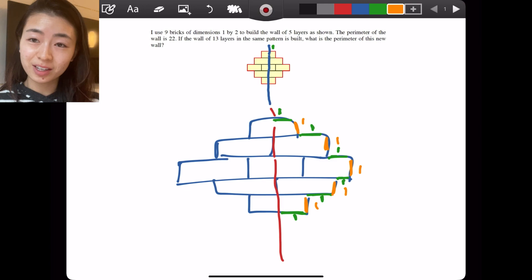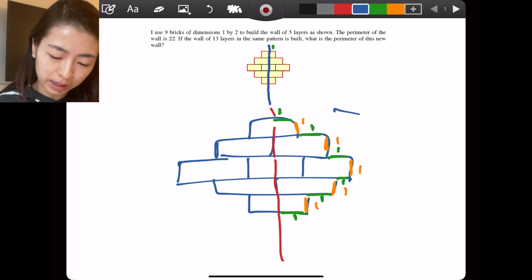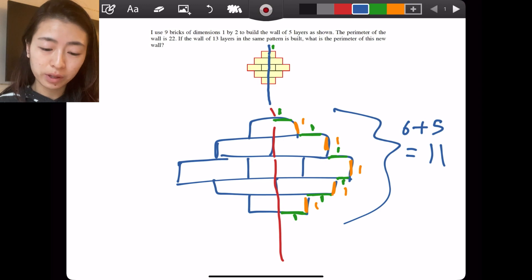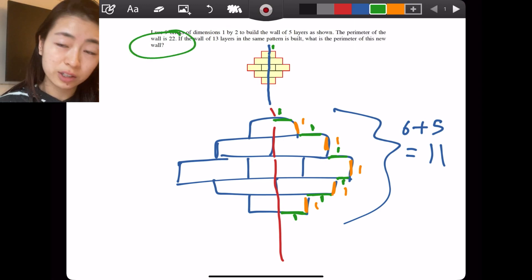The reason I do this and why I cut it in half is because at the end, no matter what kind of wall, all I have to do is multiply it by two to get the total perimeter. So on this side, if I add it together, I have six plus five, which equals 11. This makes sense with the original perimeter of 22 because we have two sides and two times 11 is 22.